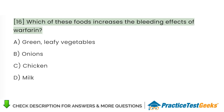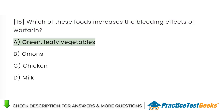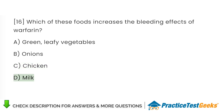Which of these foods increases the bleeding effects of warfarin? A. Green, leafy vegetables. B. Onions. C. Chicken. D. Milk.